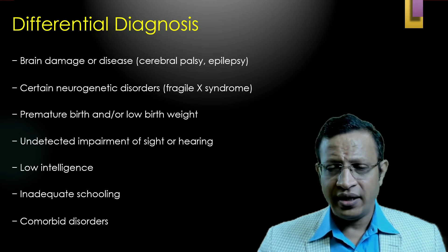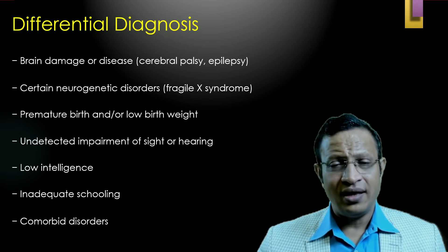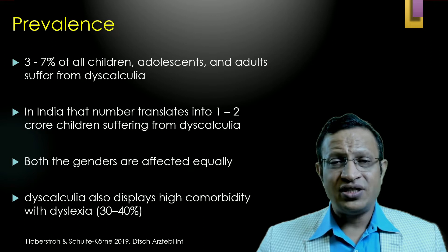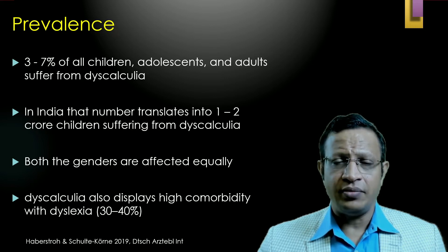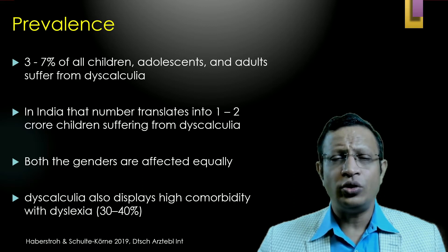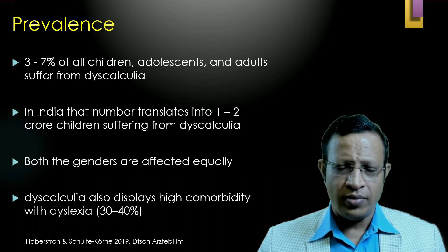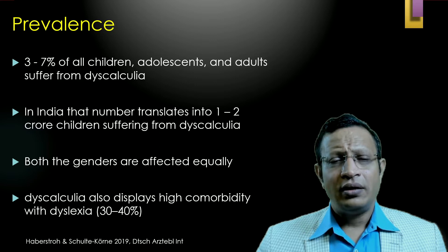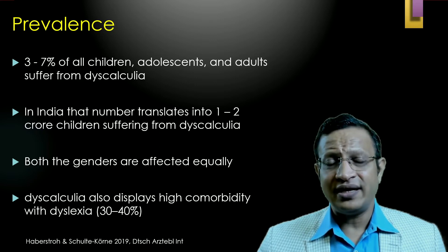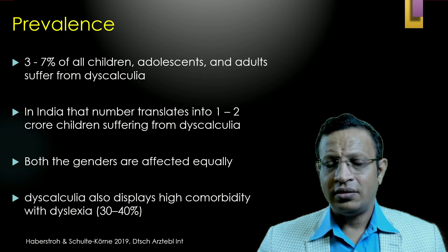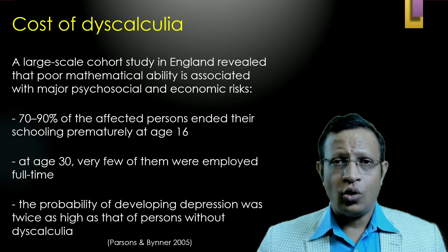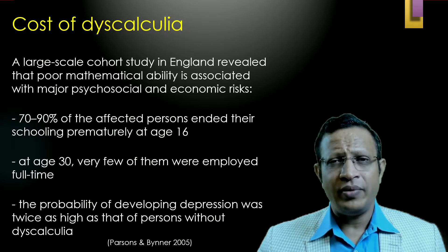They are unable to generalize arithmetic skills in real life. For example, you can teach them that 2 plus 2 is 4, but when you give them 2 apples in one hand and another 2 apples in the other hand and ask them to count, they find it very difficult to generalize what they have learned. Difficulty in understanding numbers and quantities in real life — generalization of skills does not occur. High levels of mathematics anxiety can be seen. They struggle to recognize patterns like smallest to largest or tallest to shortest, and find it very difficult to understand whether a trend is increasing, decreasing, or fluctuating.